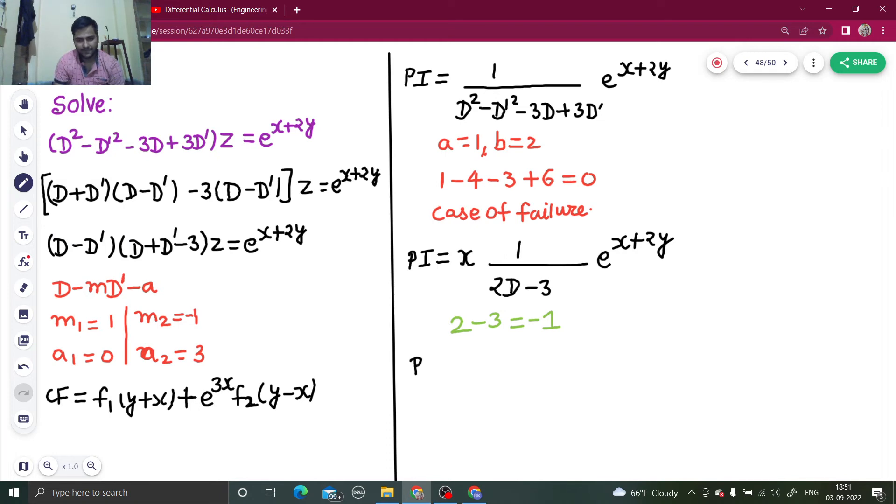So my pi finally will be x will be there. Denominator is minus 1. So minus x e power x plus 2y.